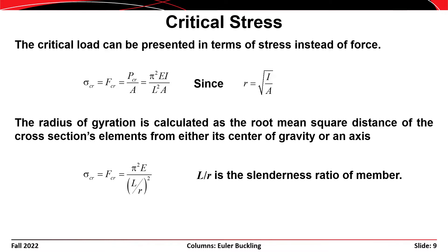The slenderness ratio L/r captures in one parameter both the flexural stiffness of the member and its length. The radius of gyration r is the root-mean-square distance of the cross-section's area elements from its centroid. A bar with area concentrated near the centroid has a relatively low r, while a round tube with area distributed further from the centroid has a larger r.